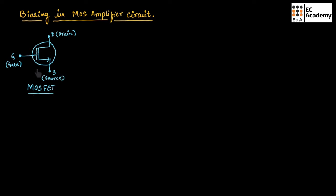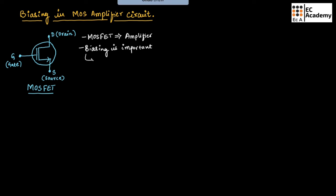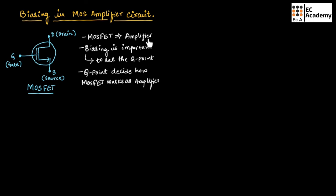This is the symbol of a MOSFET, which is a metal oxide semiconductor field effect transistor. MOSFET can also be used as an amplifier. Biasing is very important for any amplifier. Biasing is used to set the Q point, and this Q point will decide how the MOSFET will work as an amplifier.